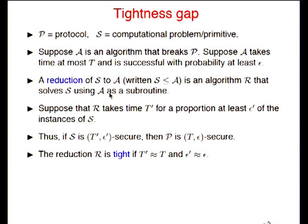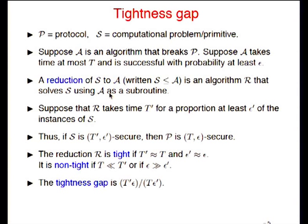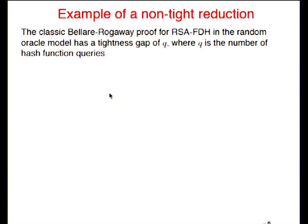Tight proofs are desirable because assumptions about the well-studied primitive are directly translated into assurances for the protocol. The proof is non-tight if T is much less than T′, or if ε is much greater than ε′. Non-tight proofs are less desirable because you don't get the same assurance for the protocol as you assume for the hard problem. The tightness gap is the ratio of the time-success probability for the hard problem and the protocol. For example, the classic Bellare-Rogaway proof for Full-Domain Hash RSA is non-tight, with the tightness gap equal to the number of queries the adversary makes to the random oracle.